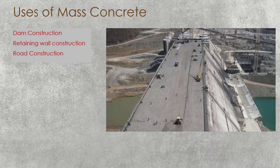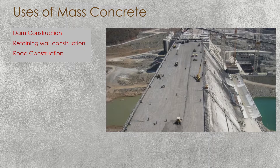Uses of mass concrete include dam construction, retaining wall construction, and road construction. As seen in the figure, very large dams can be constructed with mass concrete. Where tensile stresses must be taken, reinforcement may be provided — for example, close to spillways of dams. Other areas may not require reinforcement, as the structure itself maintains stability. Gravity retaining walls may also use mass concrete, and road construction is frequently done with mass concrete — where ground conditions are good, concrete can be placed directly on soil without reinforcement.